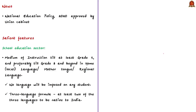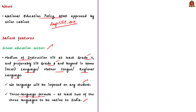Among the measures announced by the policy in school education: first, the medium of instruction is to be in mother tongue, local language, or regional language, followed at least till grade 5, preferably till grade 8 and beyond. There will be a three-language formula with greater flexibility — the three languages to be learned will be the choices of the states, regions, or students themselves, meaning no language will be imposed on any state, so long as at least two of the three languages are native to India. This is a refined stand from the draft NEP of 2019, drafted by the committee chaired by former ISRO chairperson Dr. Kasturi Rangan.